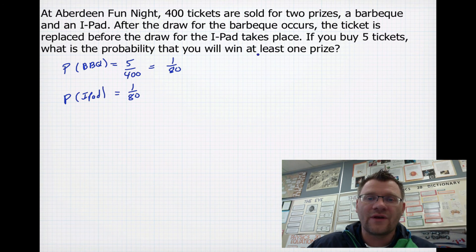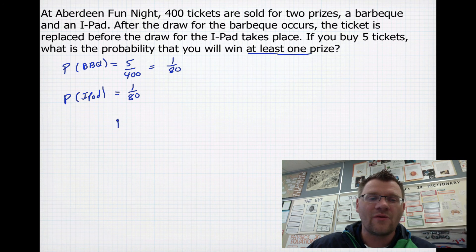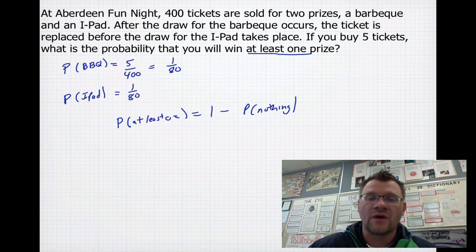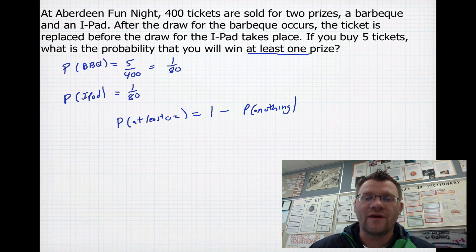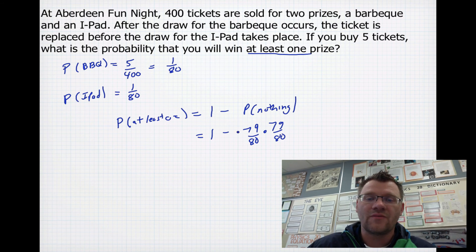Now, if we're looking for winning at least one of those prizes, remember when we see at least, you might want to do the 1 minus the probability of not winning. The probability of winning at least one is equal to 1 minus the probability of winning nothing. So we need to find the probability of winning nothing. Well, if we have a 1 in 80 chance of winning both those things, that means we have a 79 in 80 chance of not winning those things. And since those are two events and they're independent, we actually get 1 minus 79 over 80 times 79 over 80. Because we multiply them because these two events are independent. And when it's all said and done, and you multiply these together and subtract it from one, you get a 2.5% chance. So you bought five tickets out of 400, you have a 2.5% chance that you're going to win at least one of those prizes.